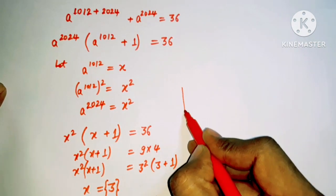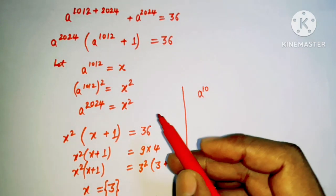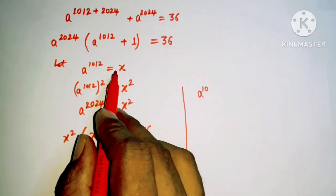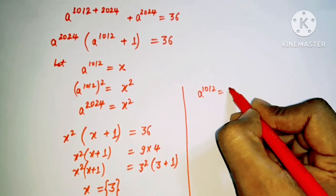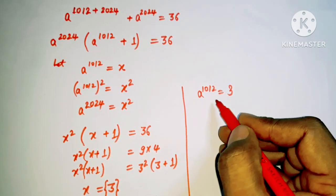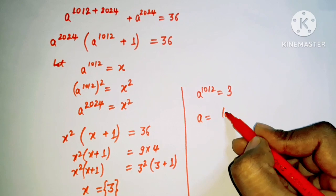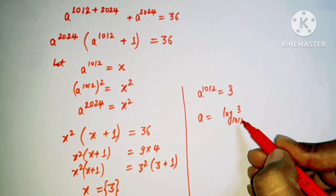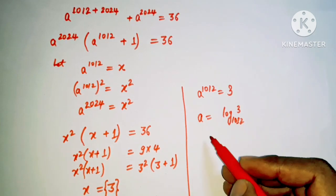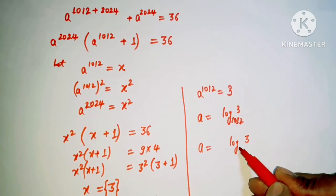If I am getting here x equal to 3, the value of x is 3. Here I can put 3, so we have a to the power 1012 that is 3. So by taking log on both sides, I will be having value for a as log 3 of base 1012.